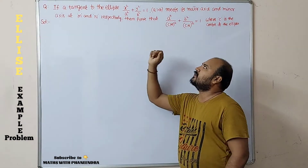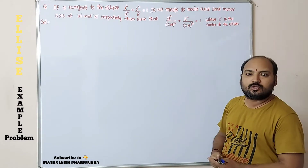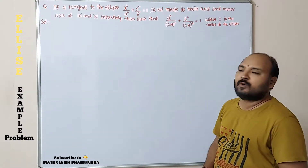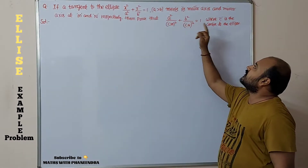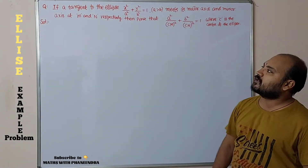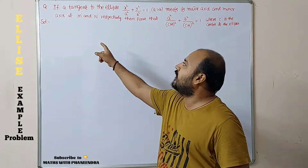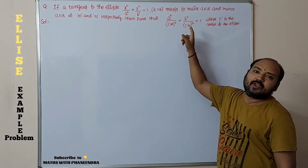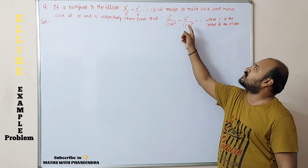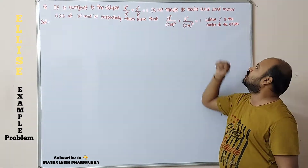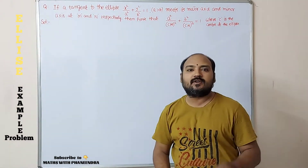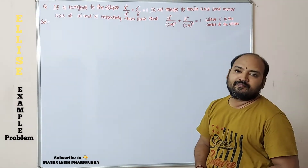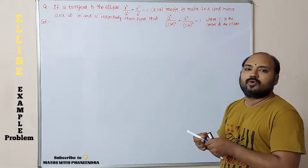ellipse x²/a² + y²/b² = 1, where a > b, in the standard form, meets its major axis and minor axis at the points M and L respectively, then prove that a²/CM² + b²/CN² = 1, where C is the center of the ellipse.